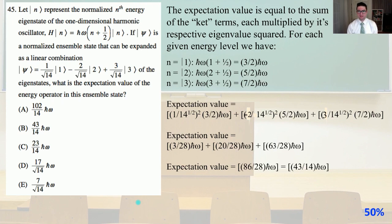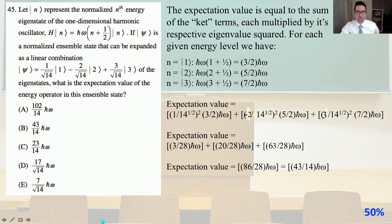The expectation value equals the sum of the squared coefficients each multiplied by their respective eigenvalue. For each energy level: n=1 gives (3/2)ℏω; n=2 gives (5/2)ℏω; n=3 gives (7/2)ℏω. With some algebra, the expectation value equals 86/28 ℏω, which reduces to 43/14 ℏω. That gives us answer B.